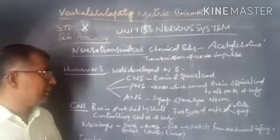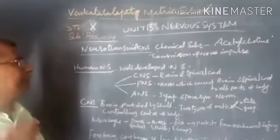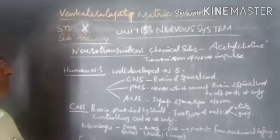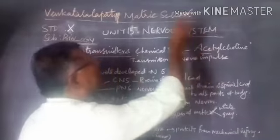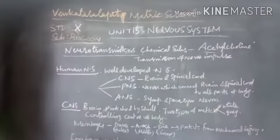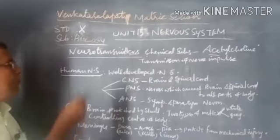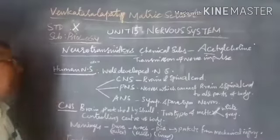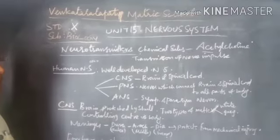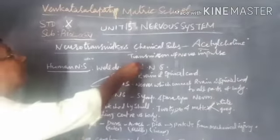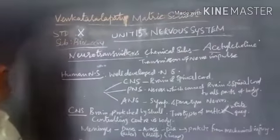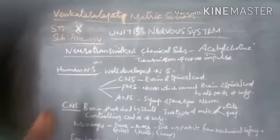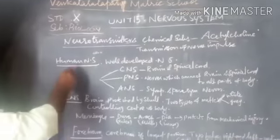Neurotransmitters are chemical substances which help neurons communicate. The chemical substance acetylcholine transfers impulses from one terminal end of a neuron to another terminal end of the neuron. This chemical substance is called acetylcholine.